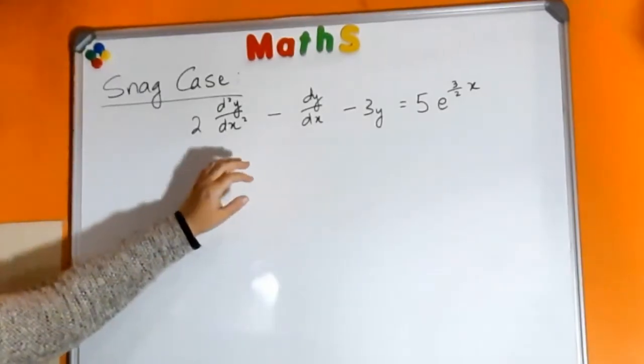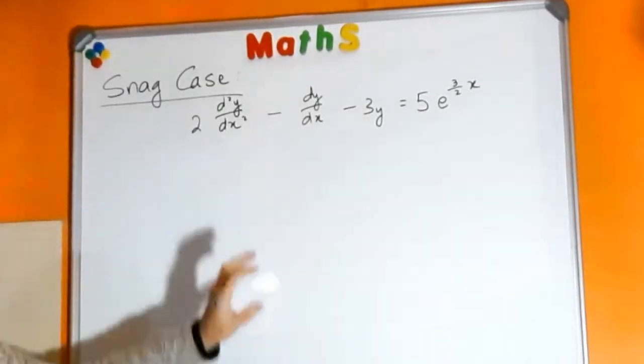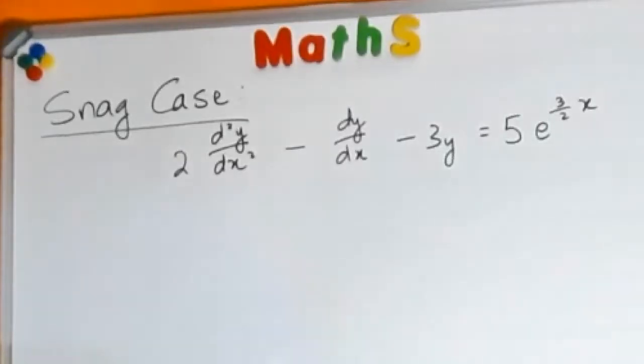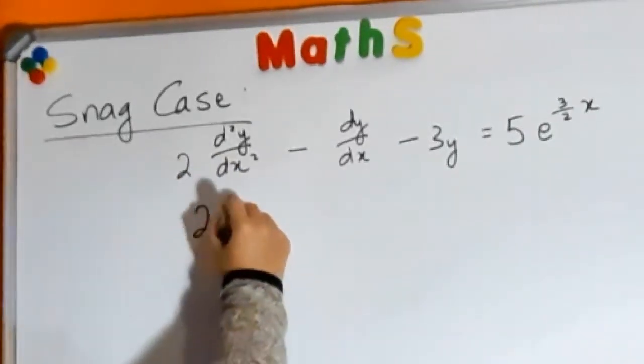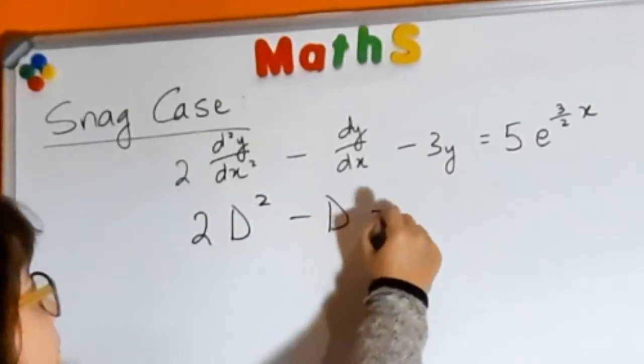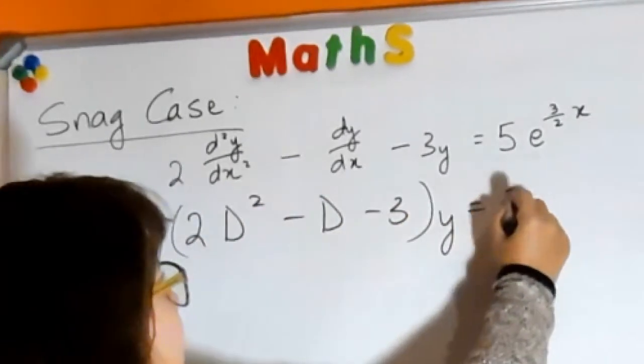So your solution is made up of two parts from your complementary function as well as your particular integral. So your equation can be written as this, using d operators.